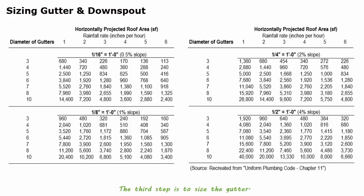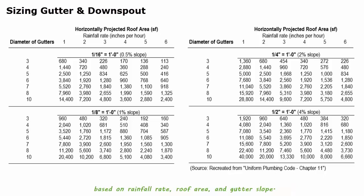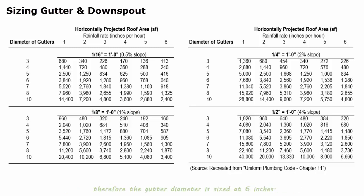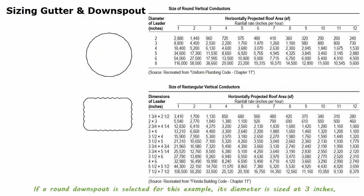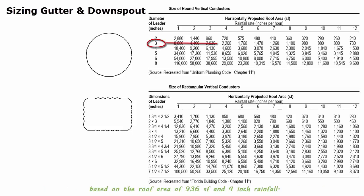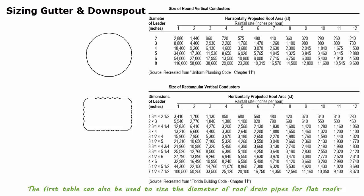The third step is to size the gutter. This table shows gutter sizing data based on rainfall rate, roof area, and gutter slope. With the gutter slope assumed at one-eighth inch per foot, the gutter diameter is sized at six inches. The fourth step is to size the downspout. These two tables show the sizing of downspouts in round and rectangular sections. If a round downspout is selected, its diameter is sized at three inches based on the roof area of 936 square feet and four-inch rainfall. The first table can also be used to size the diameter of roof drains for flat roofs.